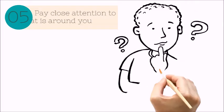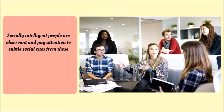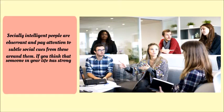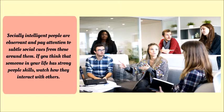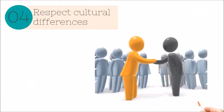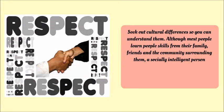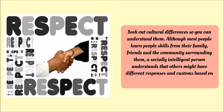Number five: pay close attention to what is around you. Socially intelligent people are observant and pay attention to subtle social cues from those around them. If you think that someone in your life has strong people skills, watch how they interact with others.